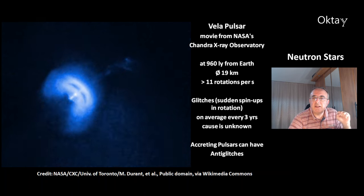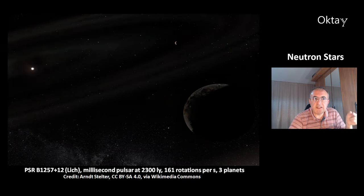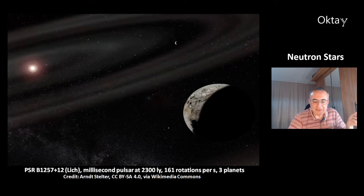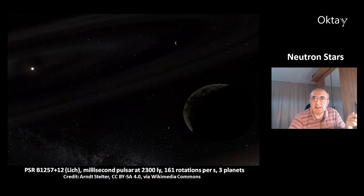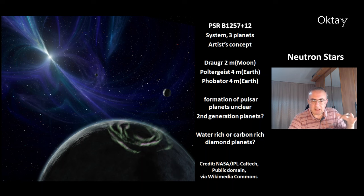Other pulsars, due to accretion, can have anti-glitches, and the reason for anti-glitches is also unknown. This is a very famous pulsar: PSR B1257+12, also called Lich. It's a millisecond pulsar at 2,300 light years with 161 rotations per second, and the system contains 3 planets. The innermost planet is called Draugr, with double the mass of the Moon. The other planets, Poltergeist and Phobetor, each have 4 Earth masses. The formation of these pulsar planets is unclear — there could be second-generation planets formed from a disk left over from the pulsar's formation.